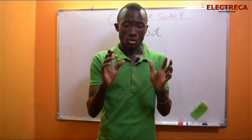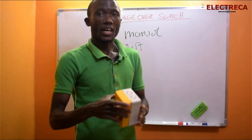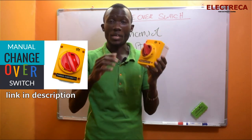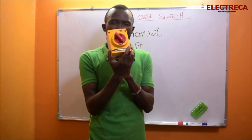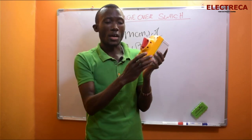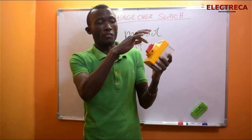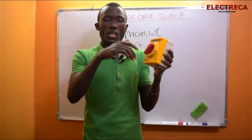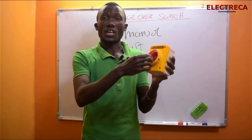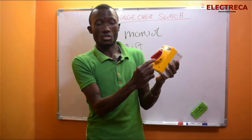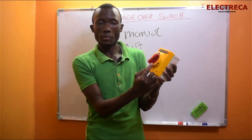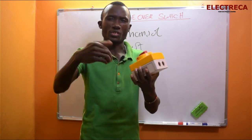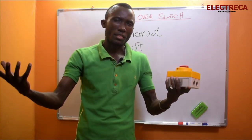We talked about manual changeover, and the manual changeover looks like this. What you're seeing out there might not be exactly this, but it will look similar — where you have two positions: one, zero, and two. So if your power fails, you just come and move it from one position to the other. The alternative power could be the generator, could be solar, whether you're using an inverter, or anything else.